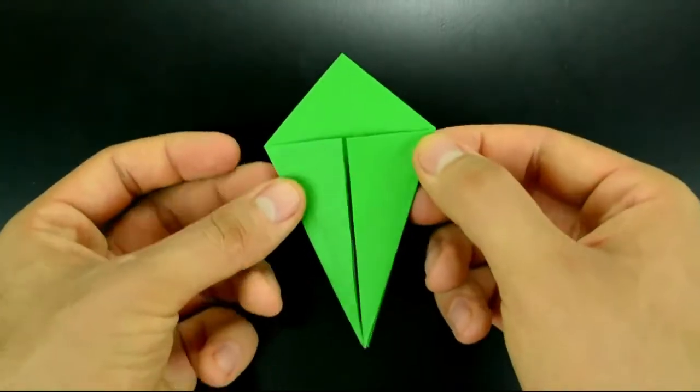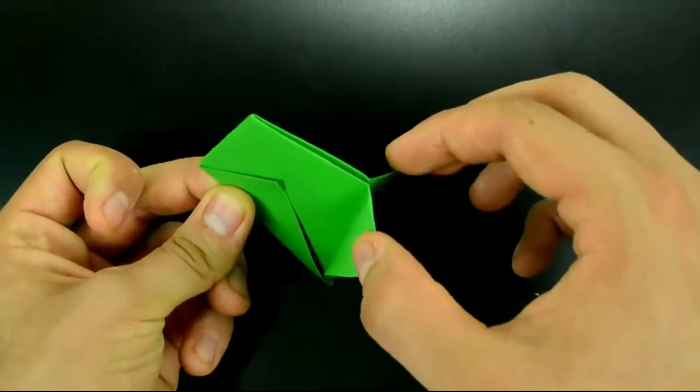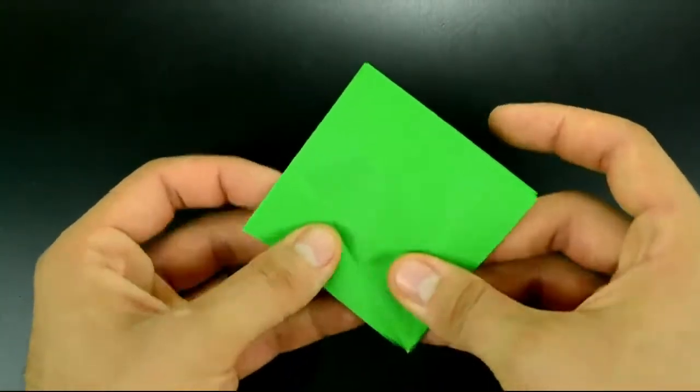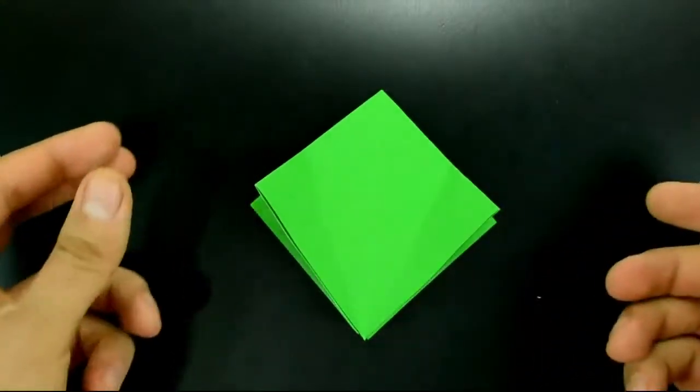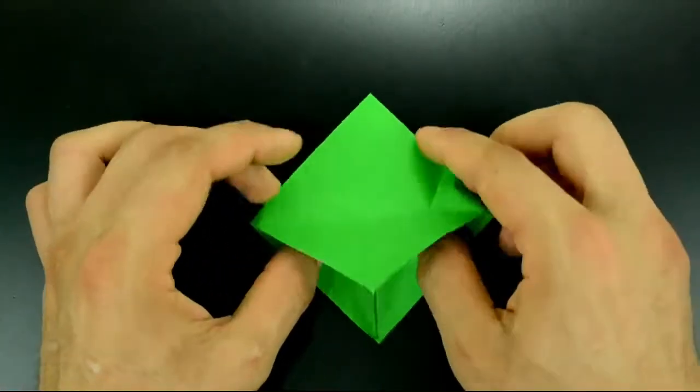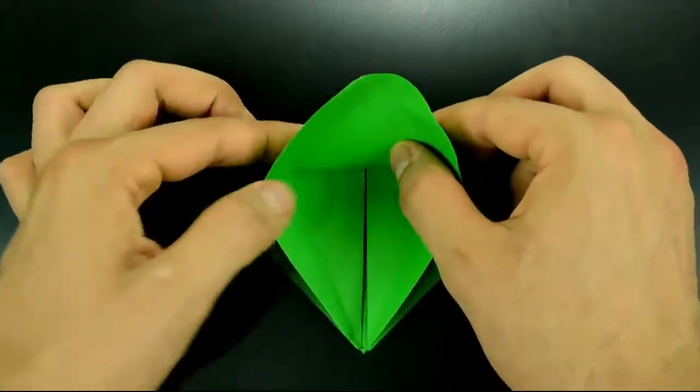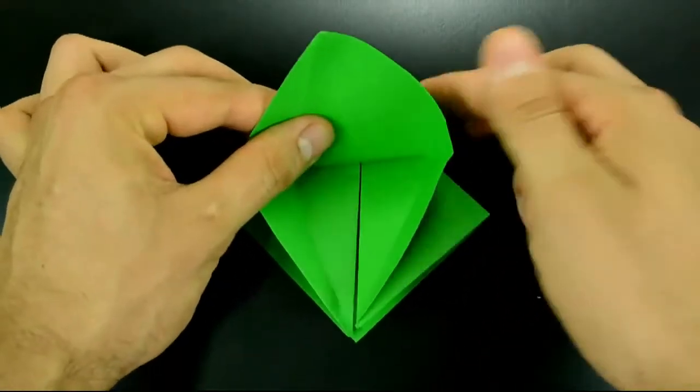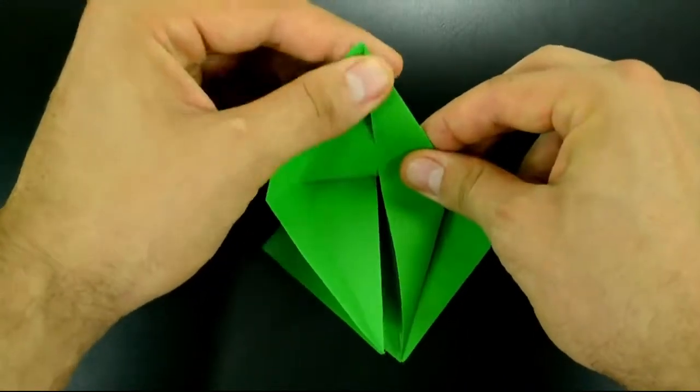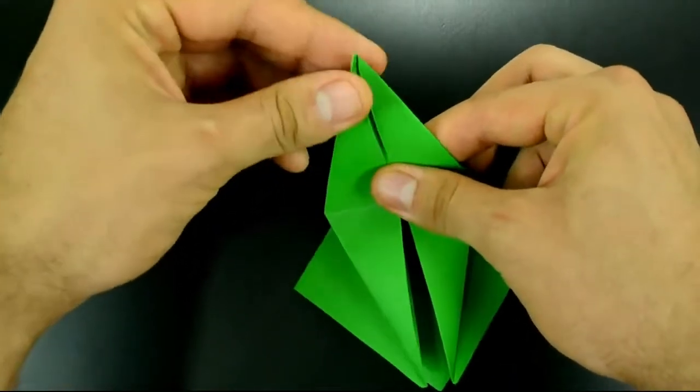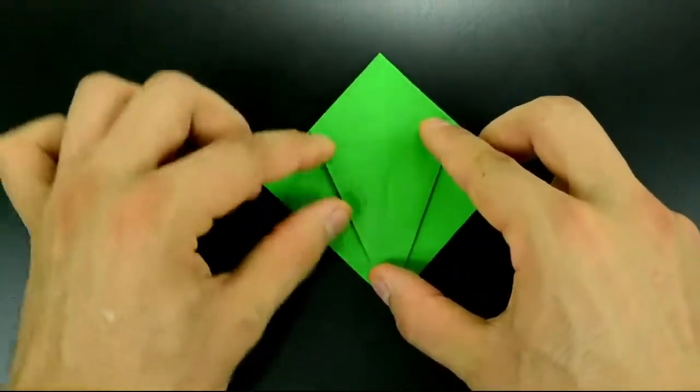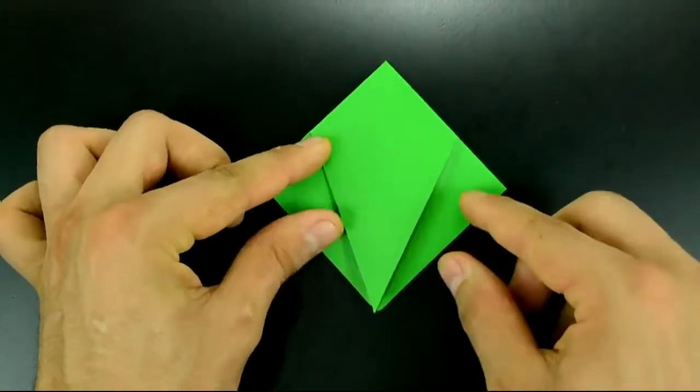And undo this step. Now lift the first layer. And use the existing creases. Close both sides to the center. Lower the new flap. Reinforce. And fold up.